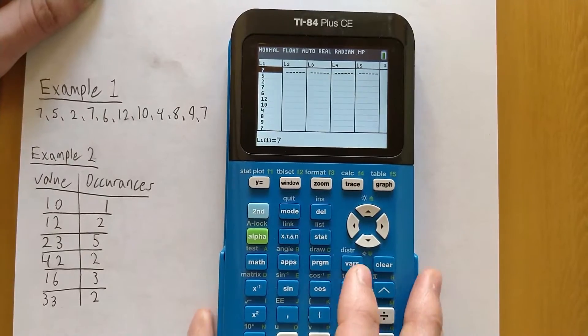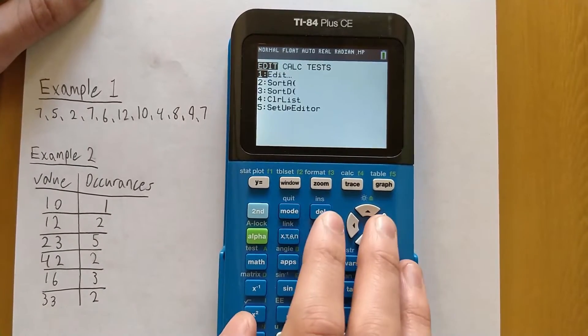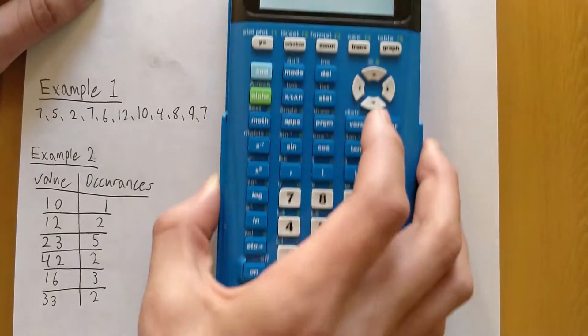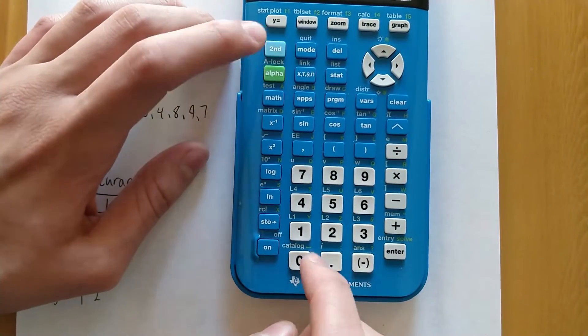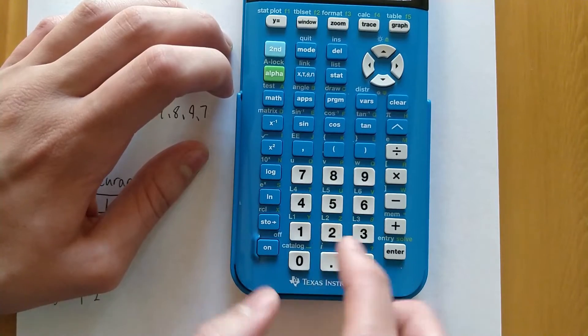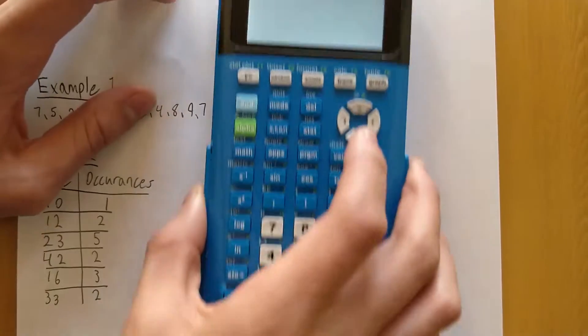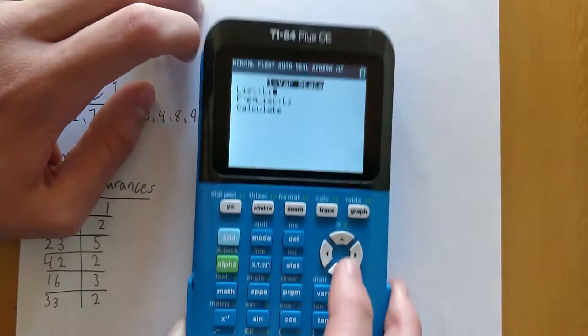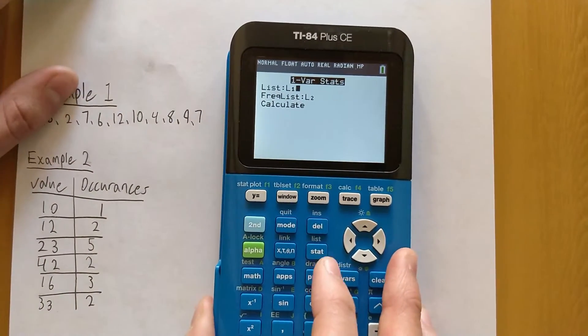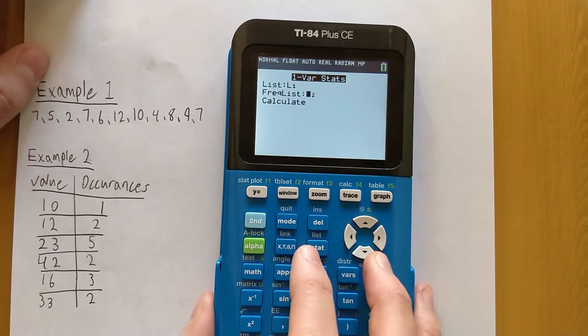If you typed it into a different list for some reason, make sure you type the correct list name. The list names are down here, so if I wanted to type L2, I would press Second and then 2, because L2 is right there. But I typed mine into L1, so I'm going to go with L1. And then for the frequency list, we don't have a frequency list here.